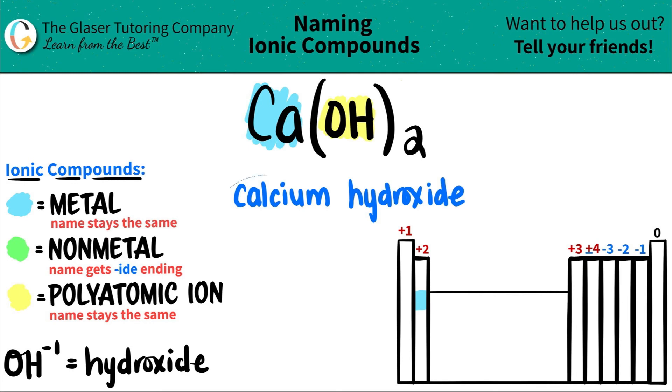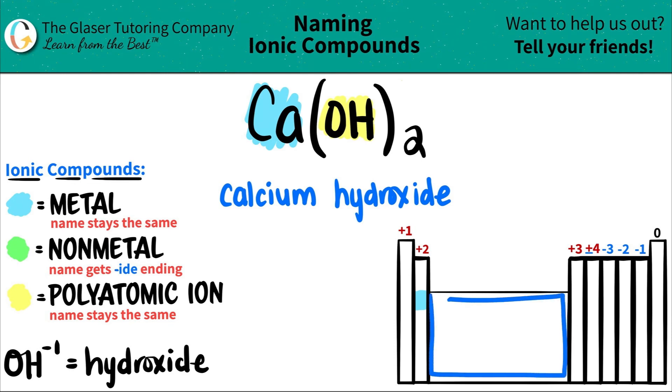And now since it's ionic, you say to yourself, do I need a Roman numeral? You only need Roman numerals for transitional metals, right? Usually they're going to be in this box here. But since calcium is an alkaline earth metal, it's in group two and not a transitional metal, I don't need a Roman numeral.